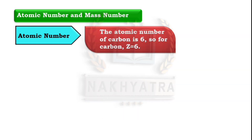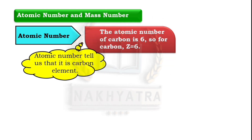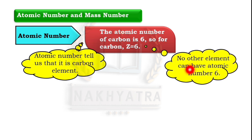For example, the atomic number of carbon is 6, so Z = 6. This tells us it is a carbon element — the atomic number helps us identify the element. No other element can have atomic number 6; only carbon has the atomic number 6.